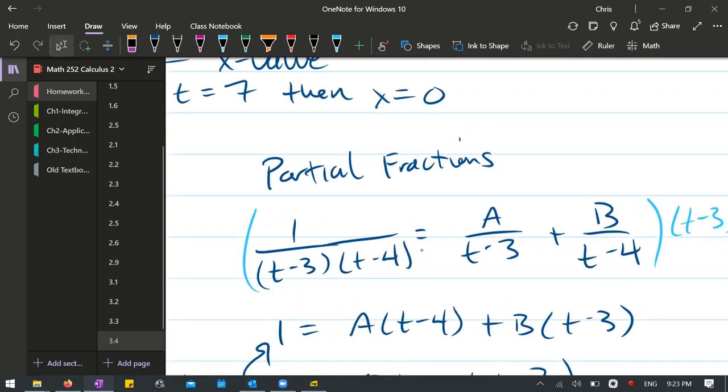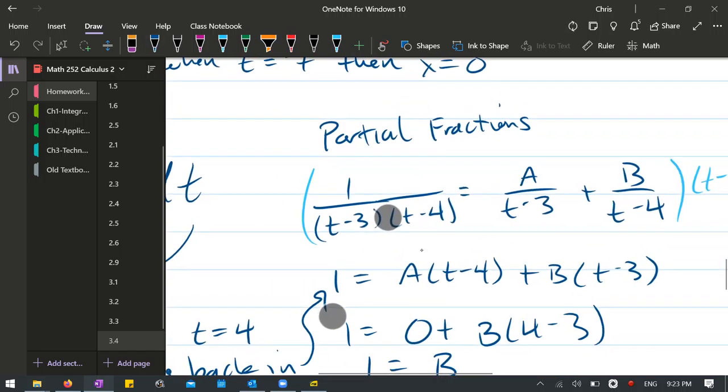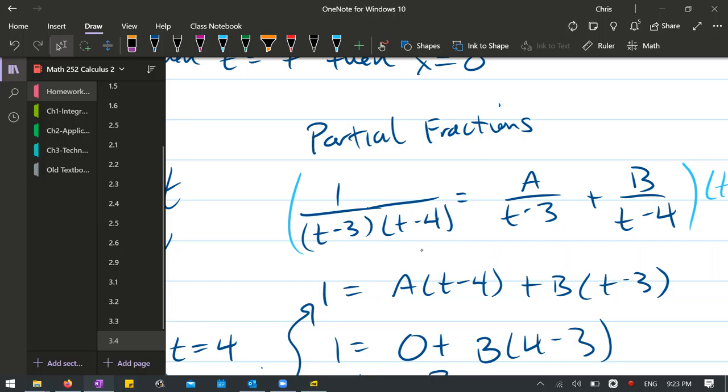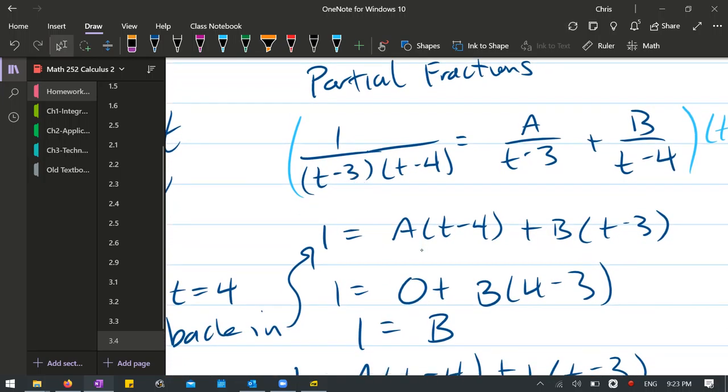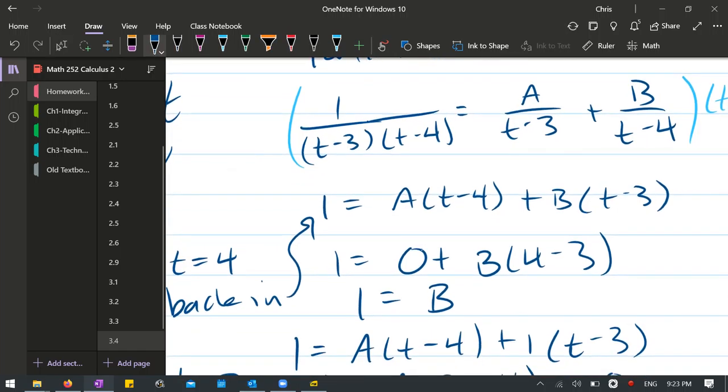From here, how do we solve for A and B? Well, t can be any value. So the two smart values to pick are four because it will turn this into zero, and the other smart one to pick is three. So I picked t equals four first. That turns the coefficient next to A into a zero. And you got to put in four in for t right here. So you have four minus three is one. So you have one equals zero plus B or one equals B.